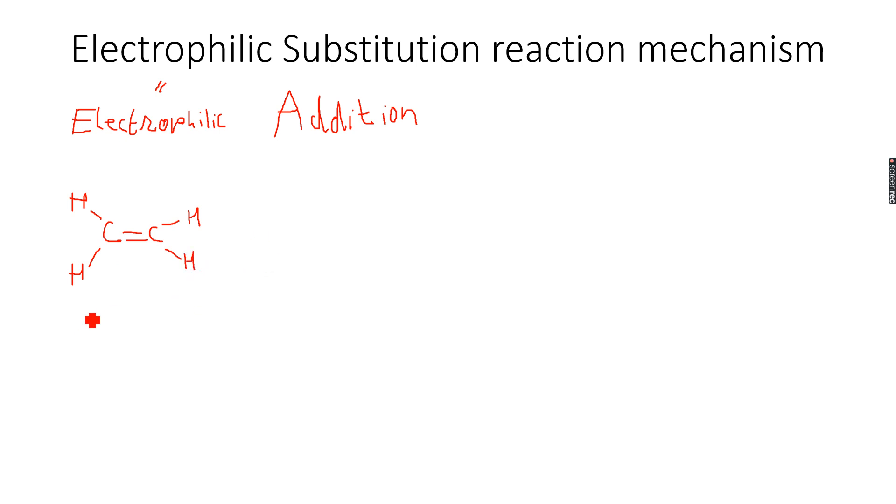So we had ethene and what we had was a halogen atom, so let's take Br2. So this was our electrophilic addition mechanism. I'm not doing electrophilic substitution right now; we'll do this in some time. Let's do electrophilic addition first so that we remember our basics.